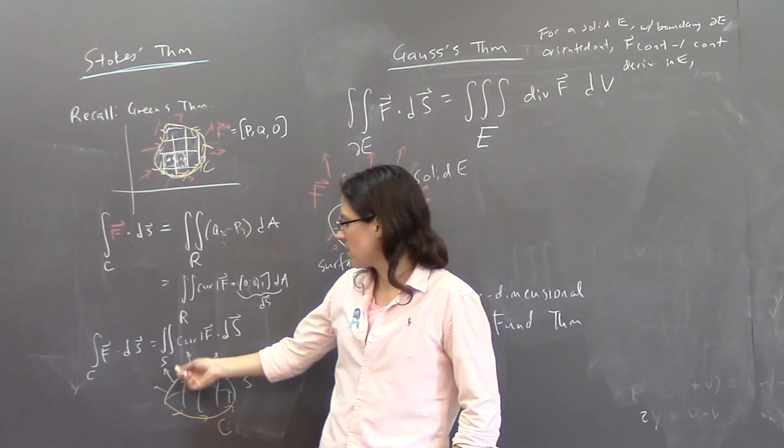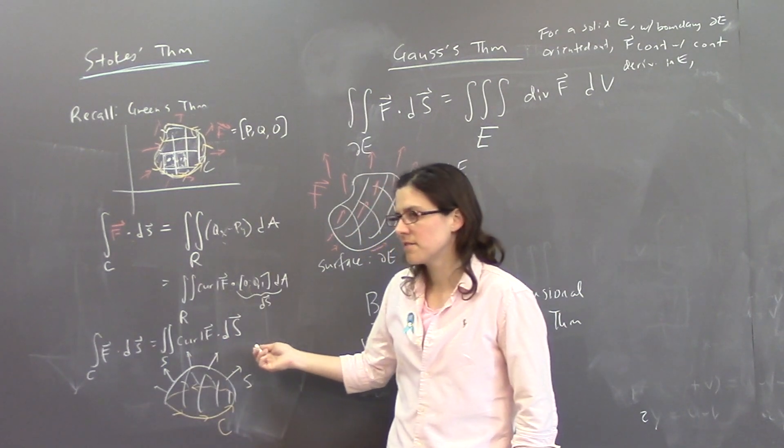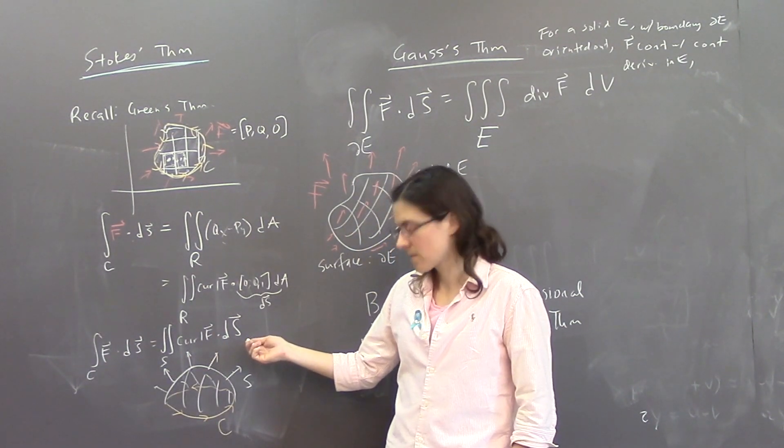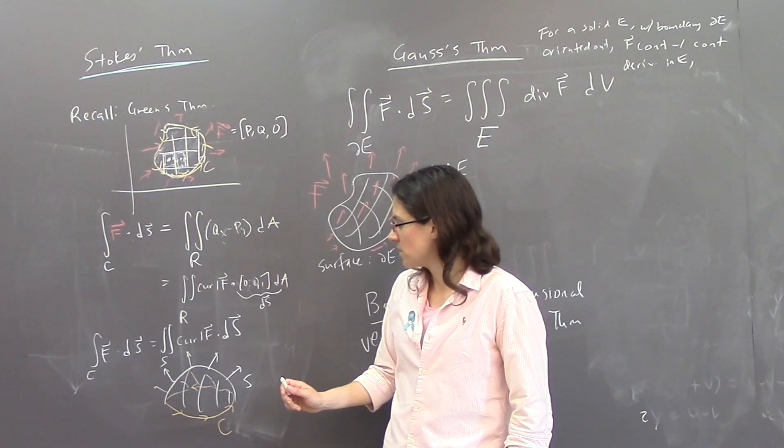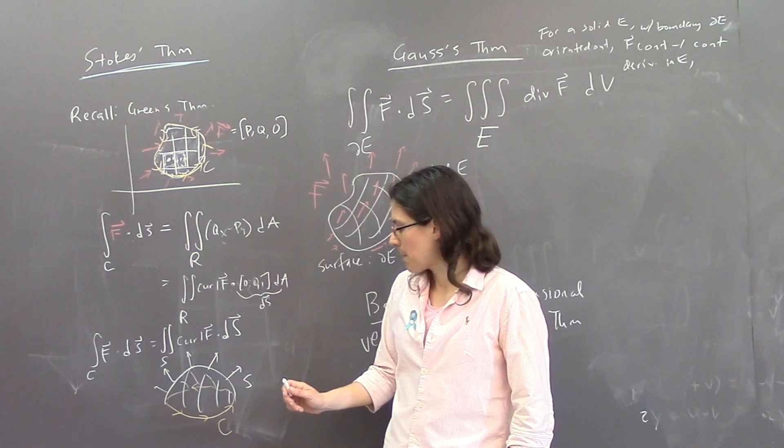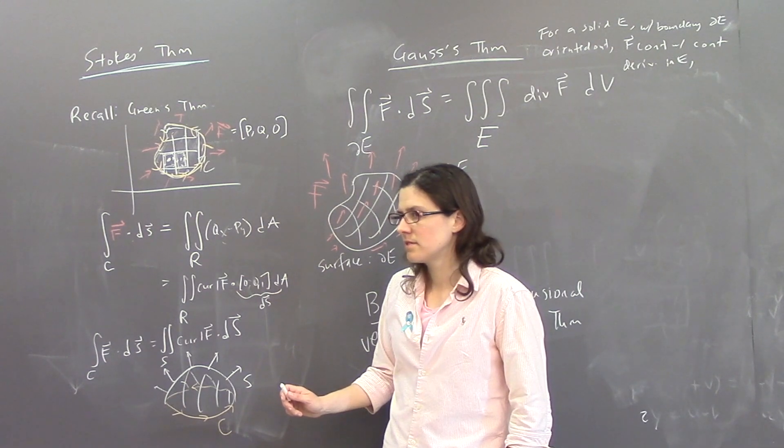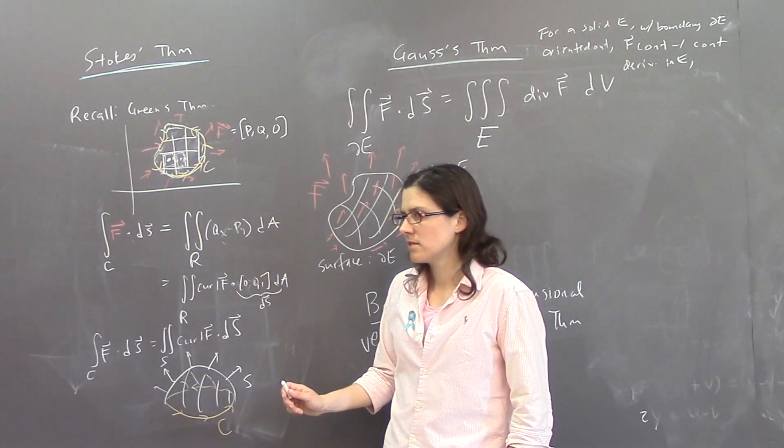So why do we dot the curl? Like, I swear again that it wouldn't really make that much sense. Like, according to that equation, right, you have to dot it with the vector, and it wouldn't really make that much sense if you weren't doing that. But I guess I just mean, like, how does that relate to the explanation where we have, like, summing the curls over the region?